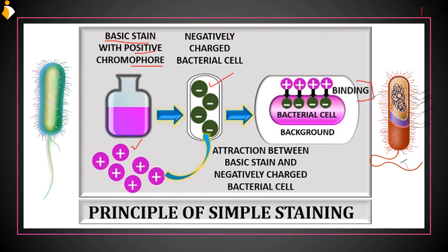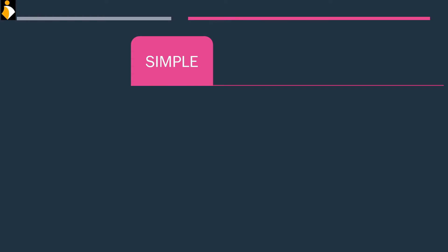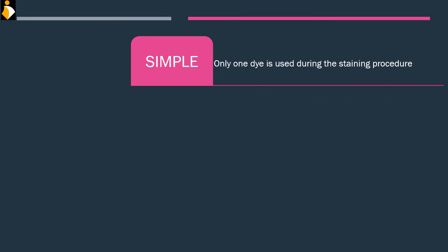Here you can see the bacterial cell is colored but the background is white only, so this is an example of positive staining. Now for simple versus differential staining: in simple staining, a single dye is used — only one dye is used. But in differential staining, whether it is gram staining or acid-fast staining, we always use multiple dyes. This is one key difference between simple and differential staining.